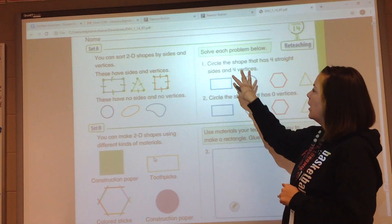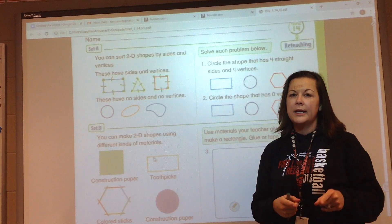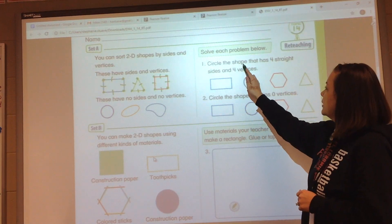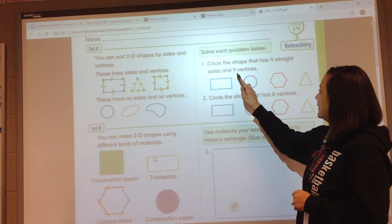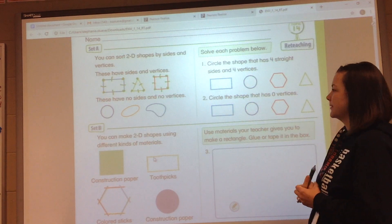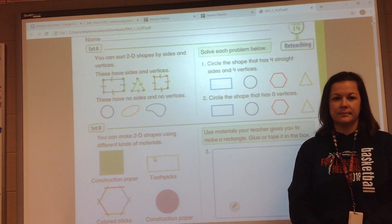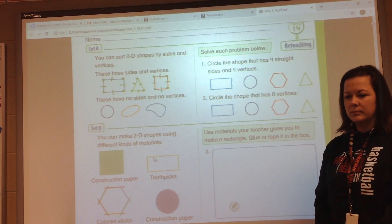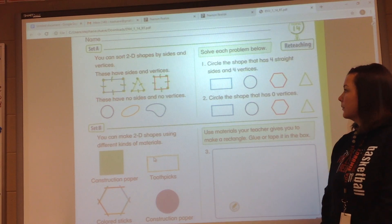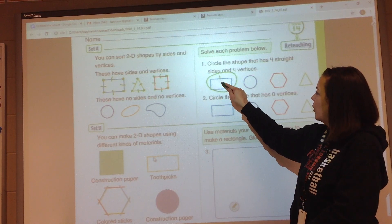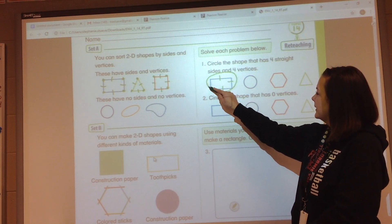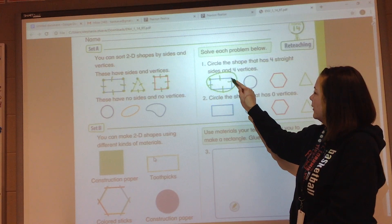So hop over to one and two. I will read them, I'd like you to do them. Circle the shape that has four straight sides and four vertices. All right, you should have circled the rectangle here, four sides and four vertices.